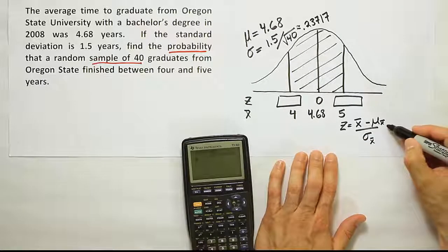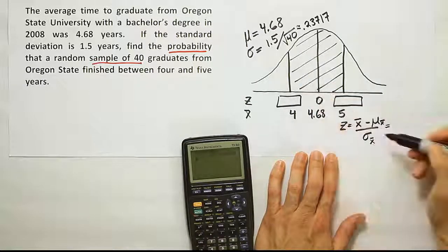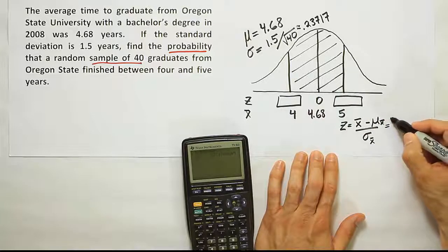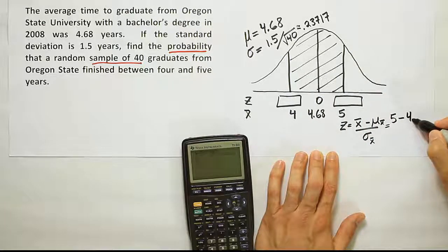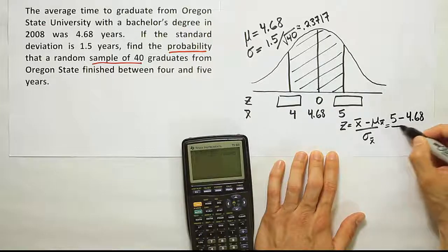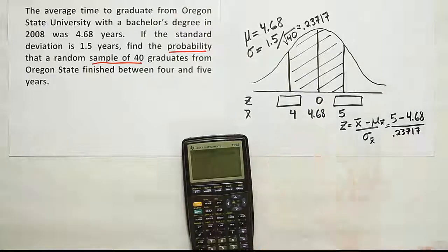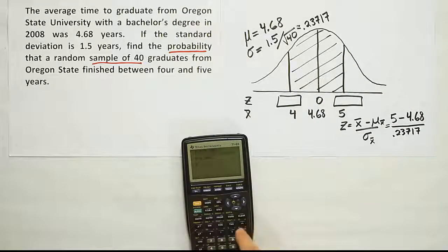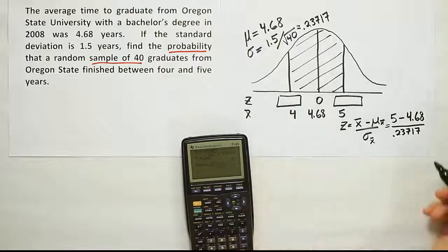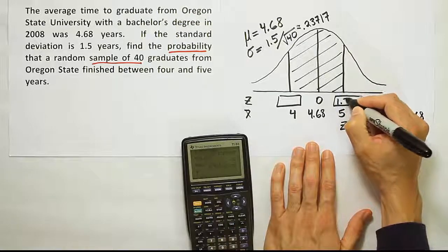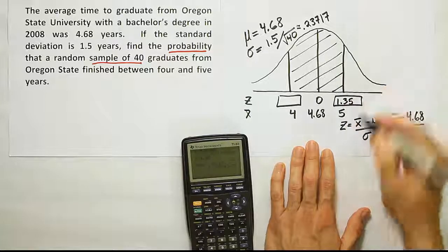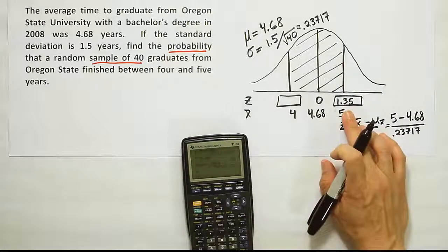Let's plug in the numbers. Let's start with the first case, the scenario where we're dealing with 5. We're converting 5 into a z-score. So 5 minus 4.68 divided by .23717. And the final answer then is 1.35. So as a z-score to two decimal places, 1.35.